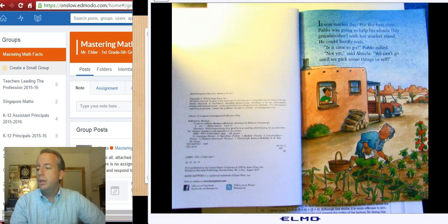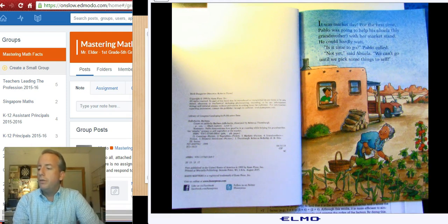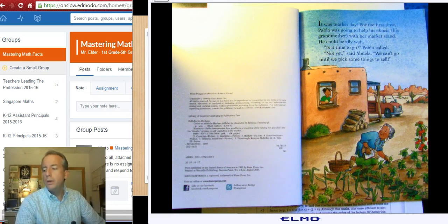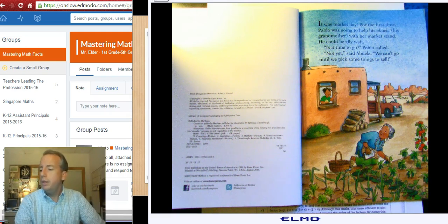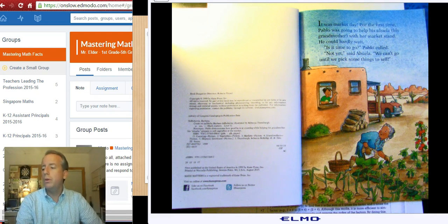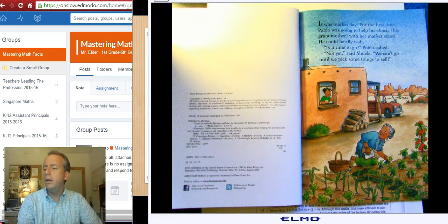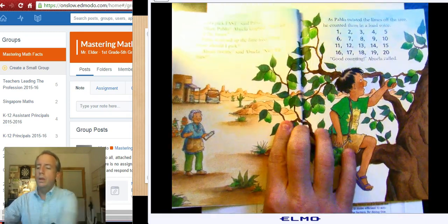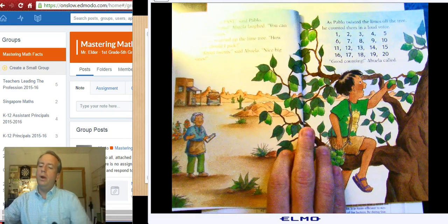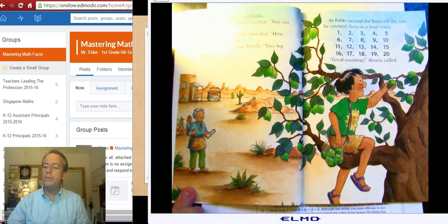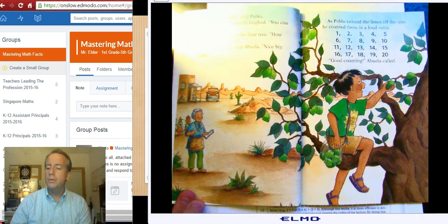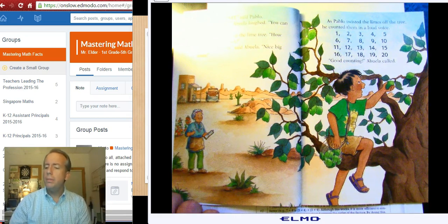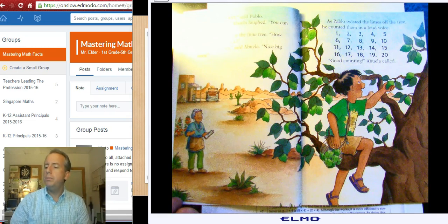So the story starts like this. It was market day, and for the first time, Pablo was going to help his abuela, his grandmother, with her market stand. He could hardly wait. Is it time to go? Pablo called. Not yet, said Abuela. We can't go until we pick some things to sell. Let's pick fast, said Pablo. Okay, Pablo, Abuela laughed. You can pick the limes.